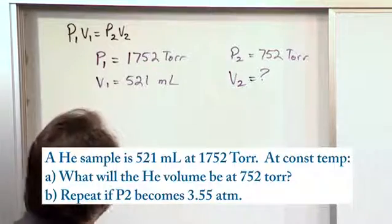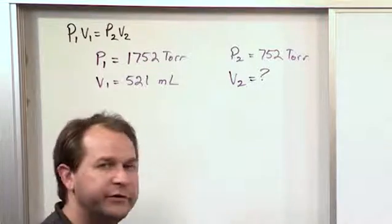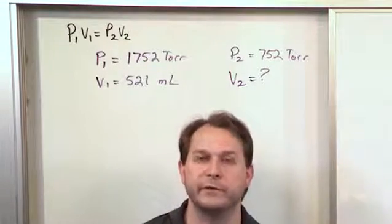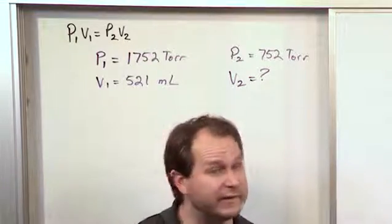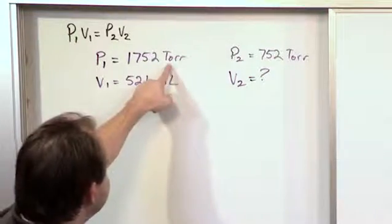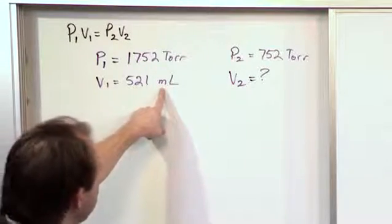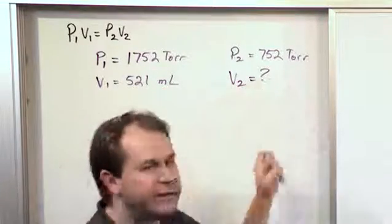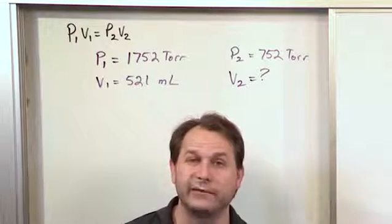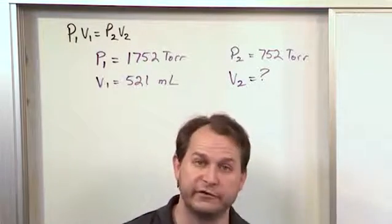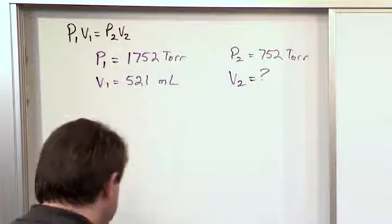Also, you need to look at your units. Make sure you're being consistent. I told you, you can use whatever units you want for pressure and volume in Boyle's Law as long as you're consistent. Your initial pressure is in torr, your final pressure is in torr. Your initial volume is in milliliters. Your final volume, when you get the answer, it's going to be in milliliters, based on the other units you have.